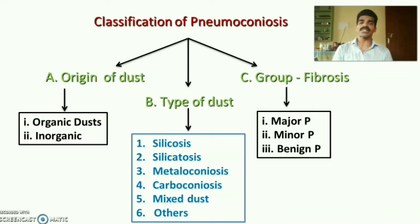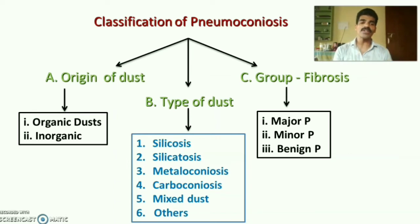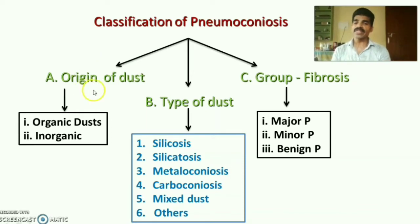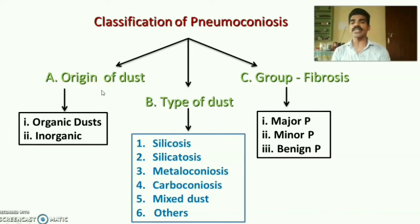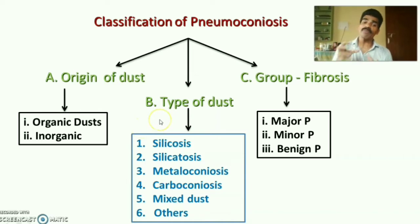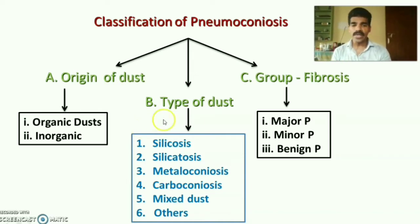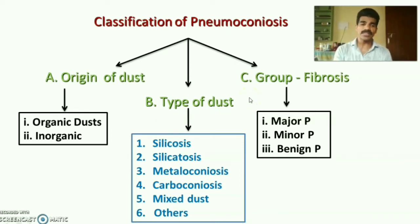There are mainly three classification systems. First, according to origin of the dust — organic or inorganic. Second, according to the type of dust — silicosis, silicatosis, metalloconiosis, carboconiosis, mixed dust, and others. Third, according to the presence of fibrosis — major pneumoconiosis, minor pneumoconiosis, and benign pneumoconiosis.